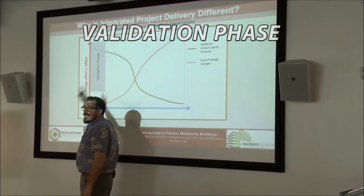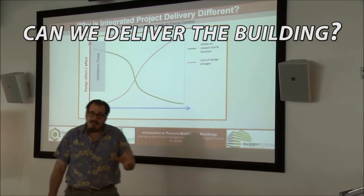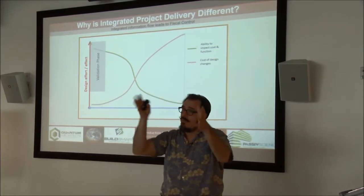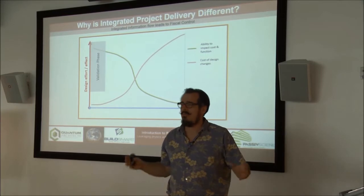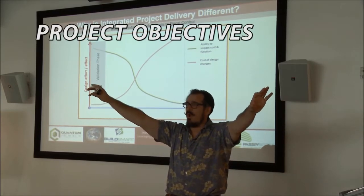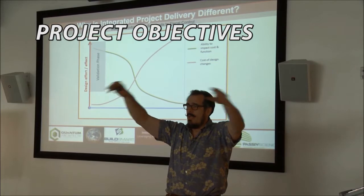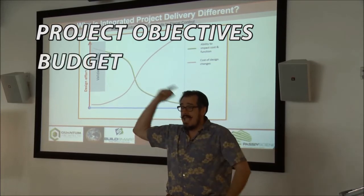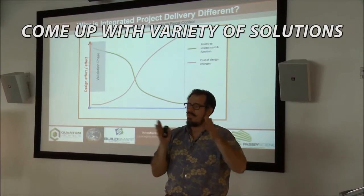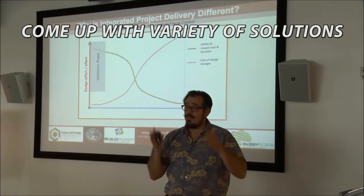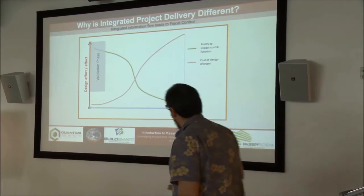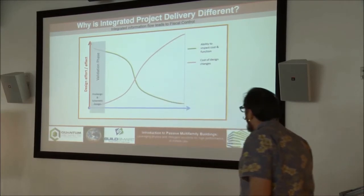We go through and we say: can we deliver the building? What we have not done is design the building and say, can we build this building for this amount of money? No, that's not what we do. We look at our project objectives — which is what we start with — and we look at our budget. We take all this into account and we say, can we come up with a variety of solutions that will meet the budget and objectives? Once we agree as a group we can, we sign a contract.